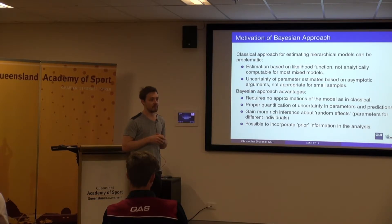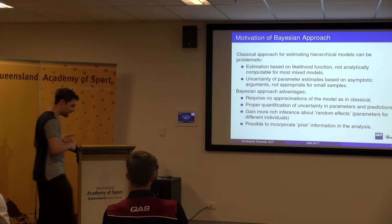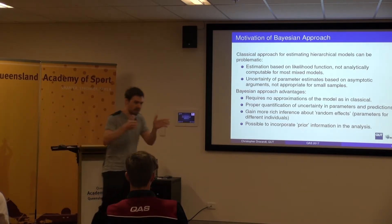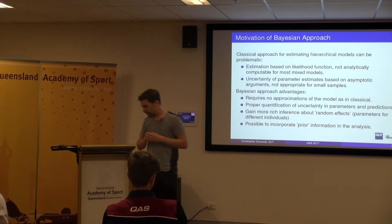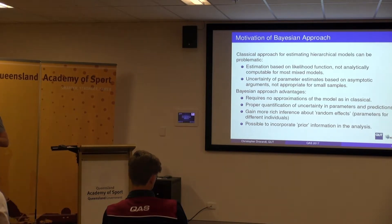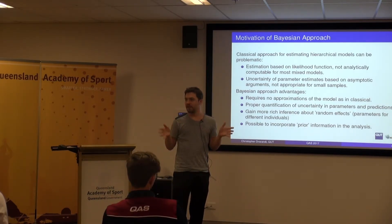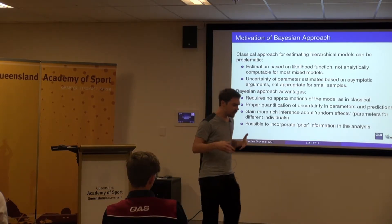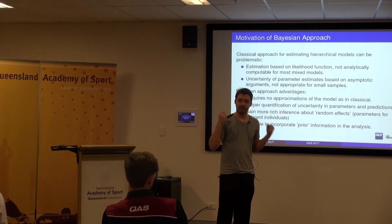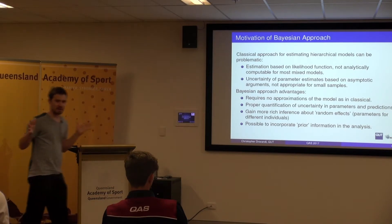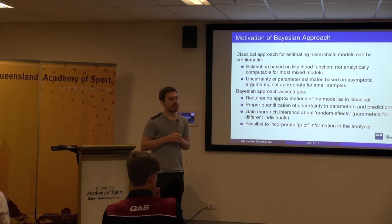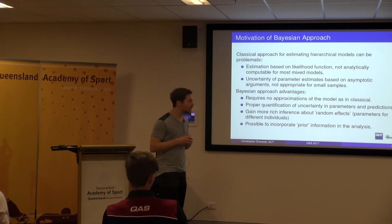So essentially what you have to do is approximate your model, meaning you're effectively estimating the parameters of a slightly different model. And secondly, when we estimate our parameters we get a point estimate, but we also want to know about the uncertainty in the parameter. So we want some kind of interval for that parameter. In the classical framework these intervals are based on asymptotic arguments — you take your point estimate and go plus or minus two times the standard error. That kind of uncertainty quantification is not appropriate in all situations, especially when you've only got a small number of observations. There's certainly nothing wrong with the classical approach, but it does have some of these limitations.